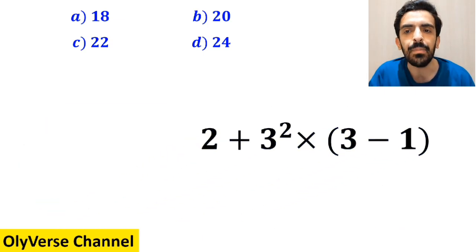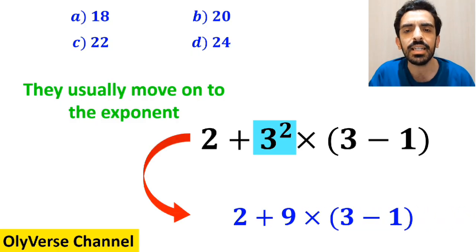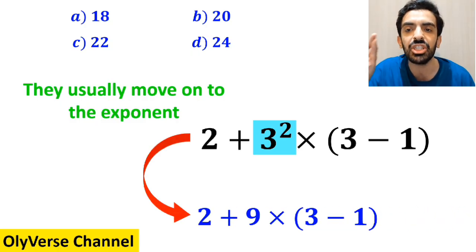And the next step, they usually move on to the exponent, and replace this expression with 2 plus 9, then times 3 minus 1 inside the parenthesis.